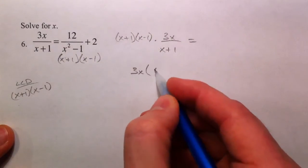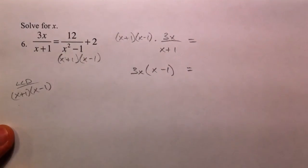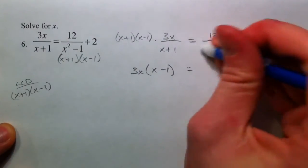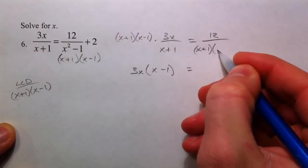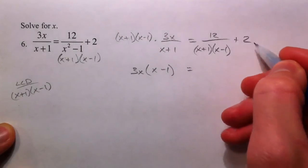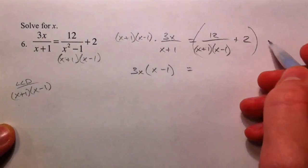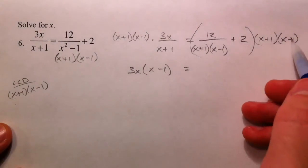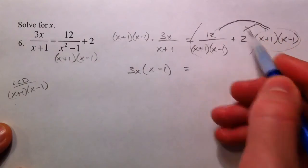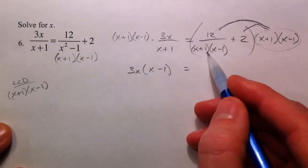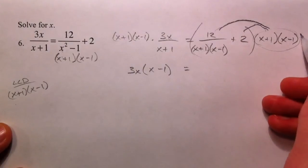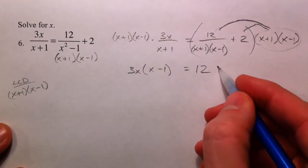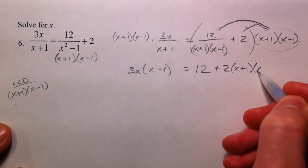That leaves 3x times x minus 1. Then 12 over x squared minus 1 — I'll write it in its factored form as x plus 1 times x minus 1 — gets multiplied by x plus 1 times x minus 1. So the whole denominator cancels out, leaving just 12. But there's no denominator to cancel with the 2, so that 2 gets multiplied by x plus 1 times x minus 1.